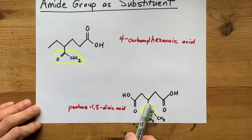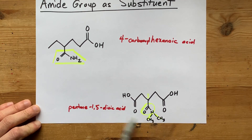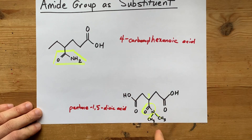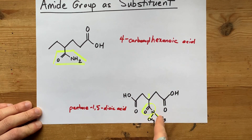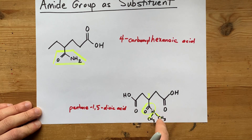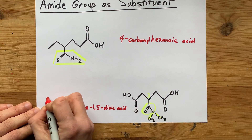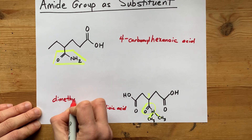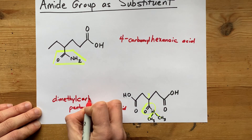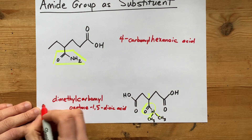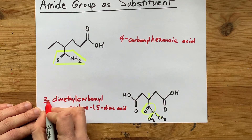Well, there are no places to make a substitution on a carbamoyl except on the N. So, you don't have to specify that these things are attached to the N. And now I have a methyl group and another methyl group — that's two methyl groups. We're going to call that a dimethylcarbamoyl substituent, and we're going to make sure everyone knows it's on carbon three of the original chain.